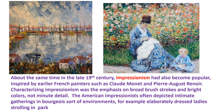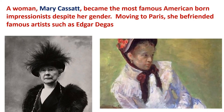About the same time in the late 19th century, Impressionism had also become popular, inspired by earlier French painters such as Claude Monet and Pierre-Auguste Renoir. Impressionism was characterized by broad brushstrokes and bright colors rather than minute detail. American Impressionists often depicted intimate gatherings in bourgeois environments, such as elaborately dressed ladies strolling in the park. A woman, Mary Cassatt, became the most famous American-born Impressionist despite her gender; moving to Paris, she befriended famous artists such as Edgar Degas.